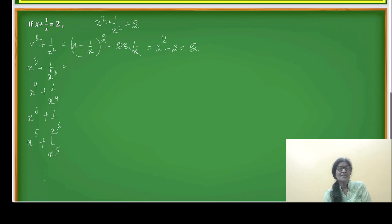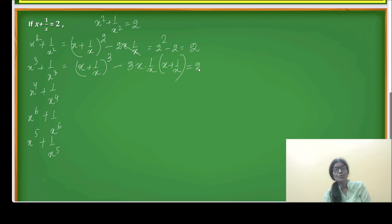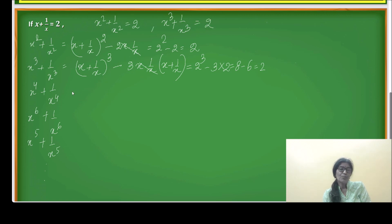Next is x cubed plus 1 over x cubed. This can be written as (x + 1/x)³ minus 3 times x times 1/x times (x + 1/x). So this will be 2 cubed minus 3 times 2, which is 8 minus 6 equals 2. Interesting — x cubed plus 1 over x cubed is also equal to 2.